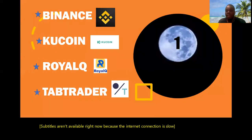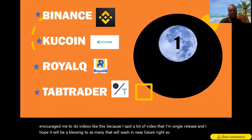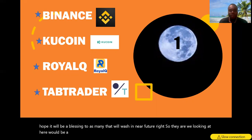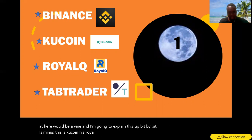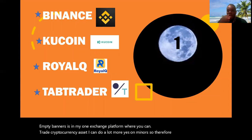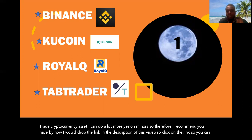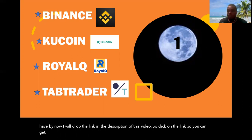The apps we'll be looking at here will be Binance, KuCoin, Reaq, and Top Trader. Binance is the number one exchange platform where you can trade cryptocurrency assets. I recommend you have Binance — I will drop the link in the description of this video so you can click on it, get registered, and download the app from wherever you are.